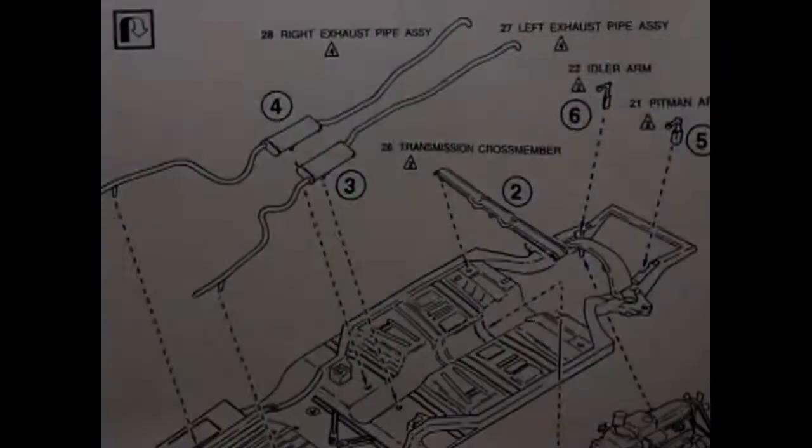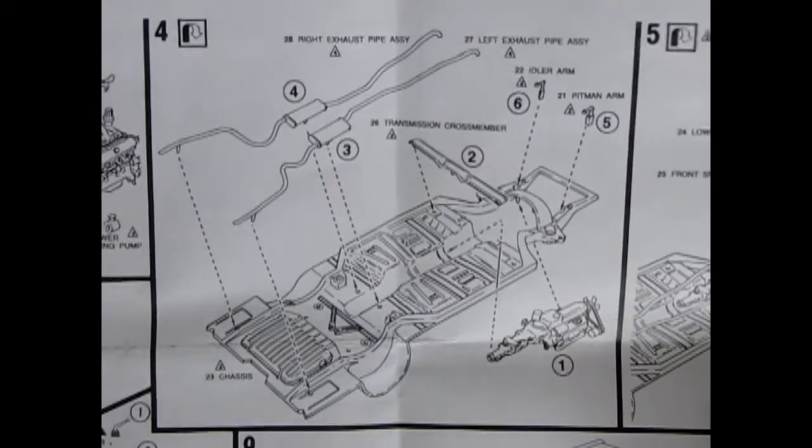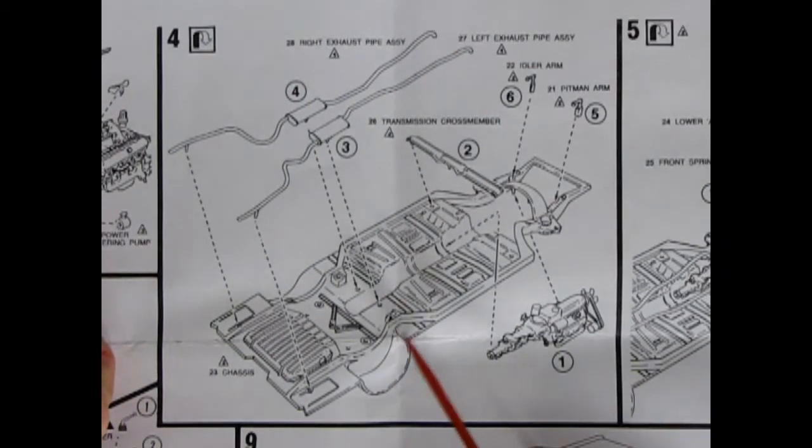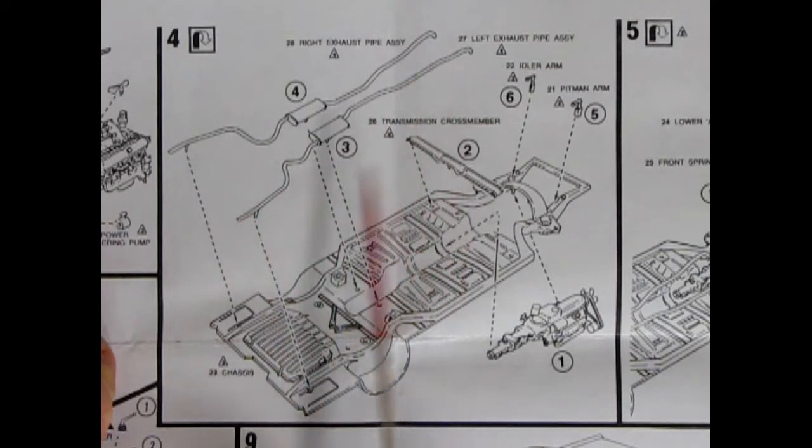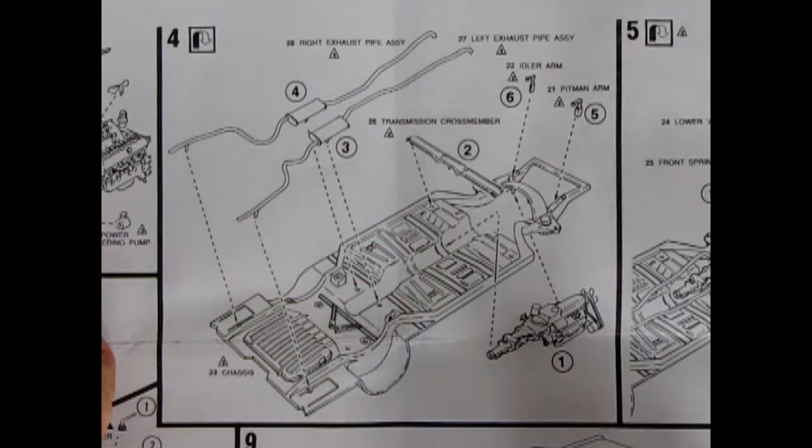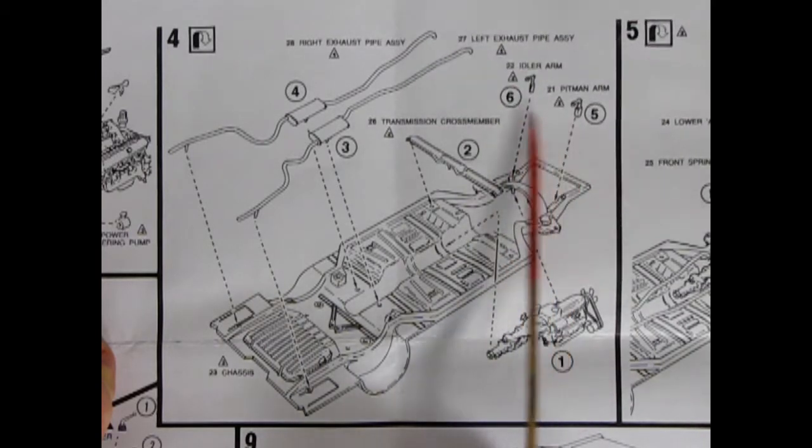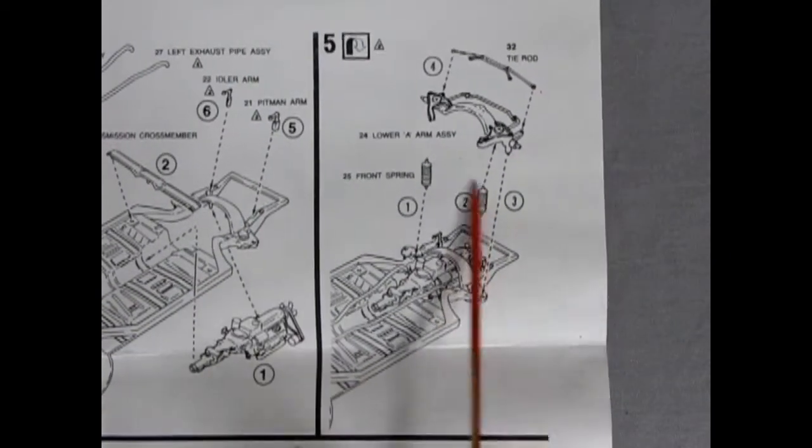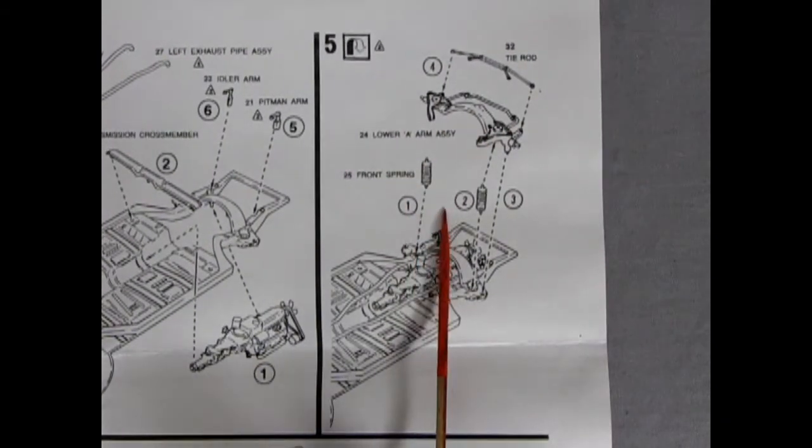So, now we'll get into panel four. I'll just zoom out a little. And, of course, all of these instructions are in the universal language of illustrations. So, there's our chassis and frame. And the transmission crossmember with the exhaust pipes as one long piece, which is kind of nice for alignment. The engine block pops in from underneath, and there's the idler arm and the pitman arm for your steering. Then, into panel five, we actually get the front suspension with the lower A-arm assembly all as one piece, the tie rod across the front, and our front springs.